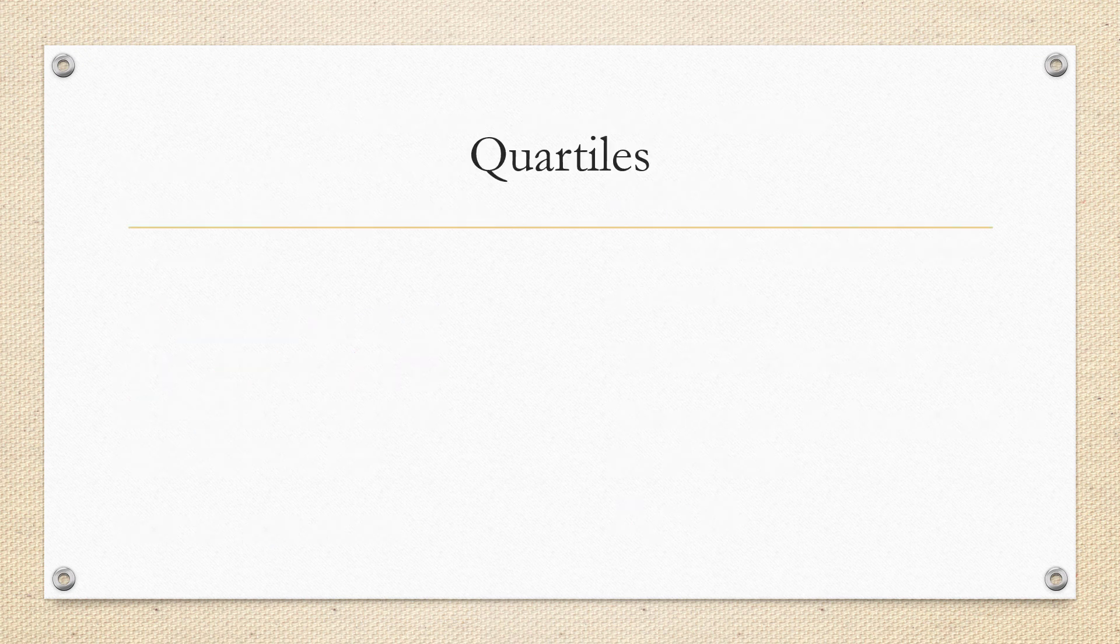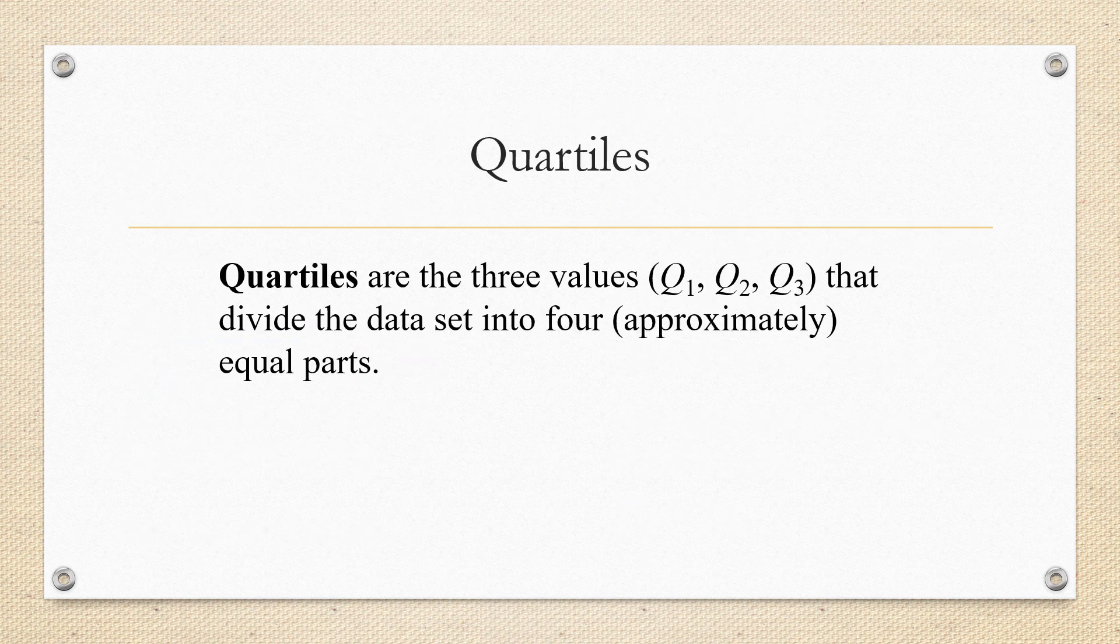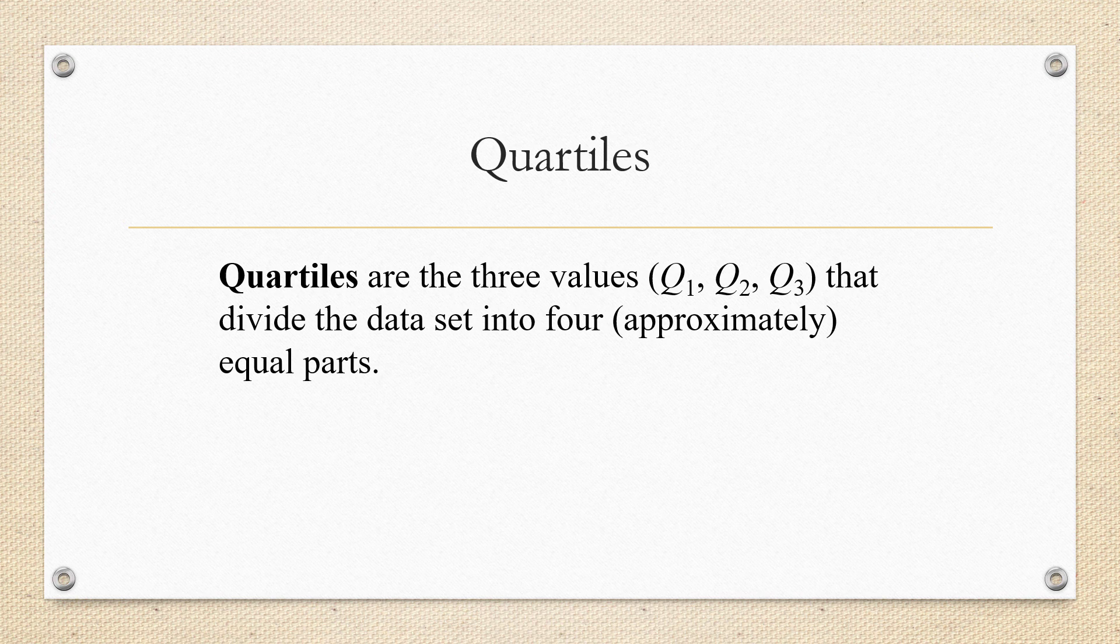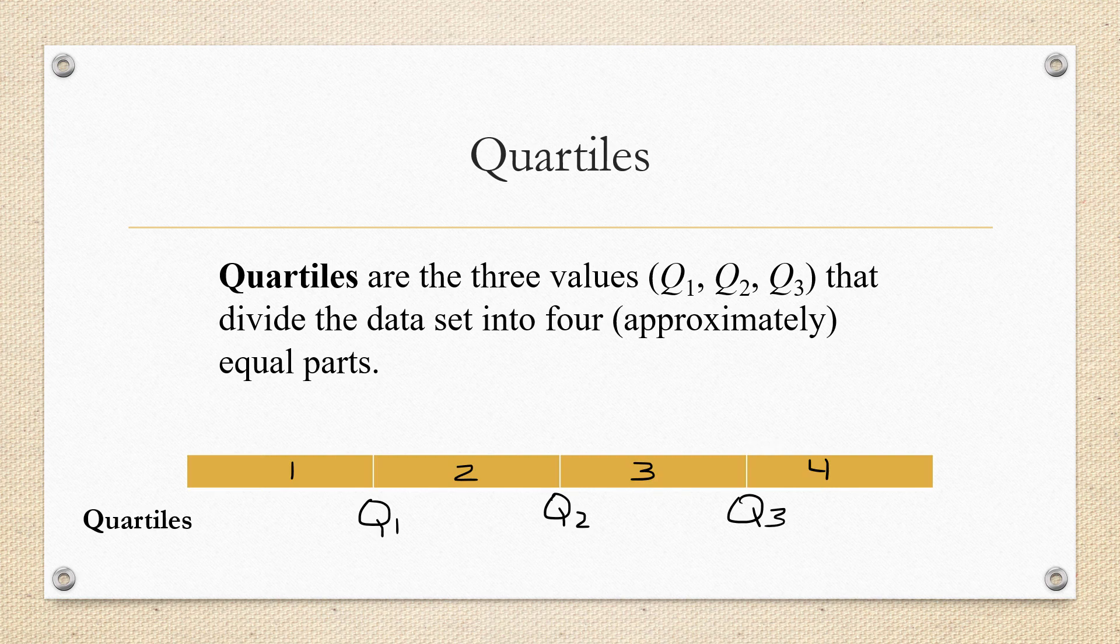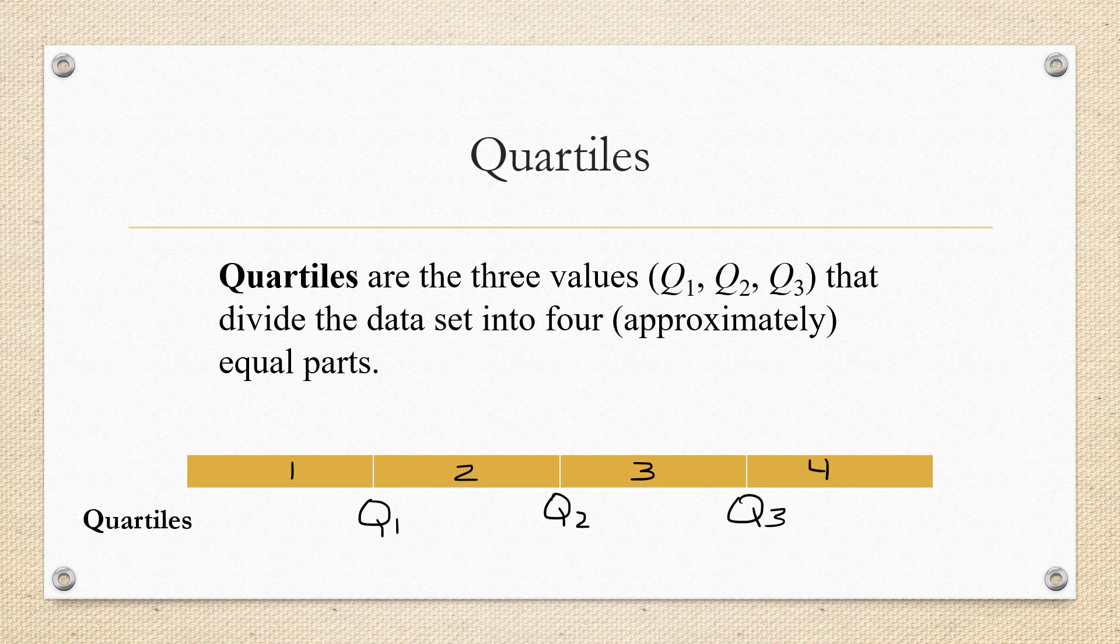Now let's talk about quartiles. Quartiles divide the data into four equal parts. We call the quartiles Q1, Q2, and Q3. It only takes three values to divide the set of data into four big chunks.